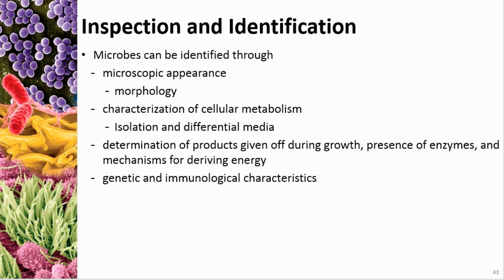Genetic and immunologic characteristics are also used for identification. With advancements in genetics, we can now look at the DNA — sequence it and see the actual code. Before we couldn't distinguish certain types of bacteria, but now we can. Immunological characteristics would be things like what types of conditions the organism might cause in a host.